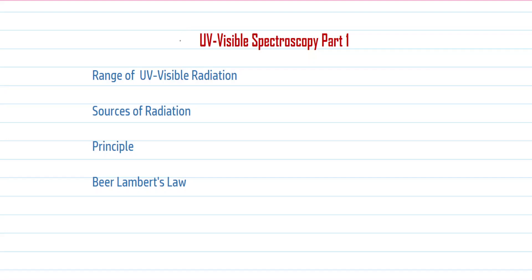Hello friends, in part 1 of the ultraviolet and visible spectroscopy, we are going to study the range of ultraviolet and visible radiation, the sources of radiation, the principle of ultraviolet and visible spectroscopy, and Beer-Lambert's law.